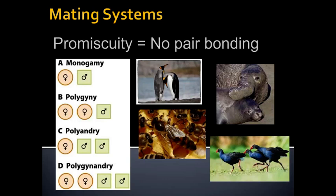Next is polygyny. Polygyny, polyandry, and polygenandry are all types of polygamy — any relationship where there are multiple mates. With the Greek root 'gyn' meaning female, polygyny means more than one female mate. Elephant seals are an example: the largest males fight for a stretch of the mating beach and then have the opportunity to mate with all the females in their territory — one male, many females.